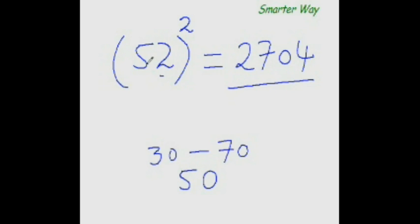52 is 2 more than 50. So, add that 2 immediately to 25. 25 plus 2 is 27. For the last two digits, find the square of that distance. Square of 2 is 4, so put 0, 4 here.